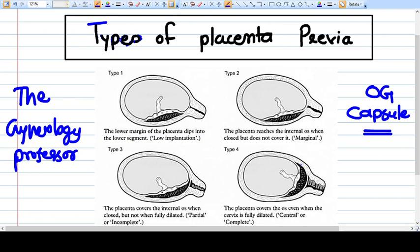There are four types of placenta previa. Type 1 is when the lower margin of the placenta dips into the lower segment. Remember, the placenta is not reaching up to the os. It is outside the os but still in the lower segment. That is type 1.